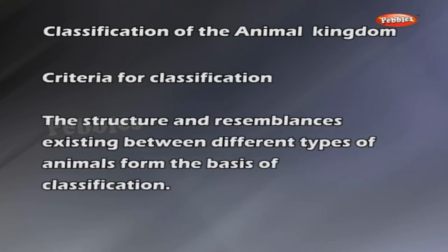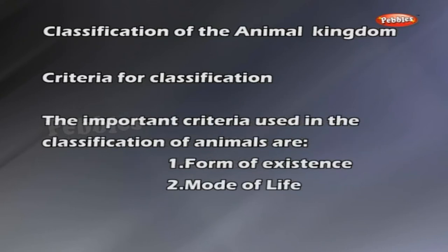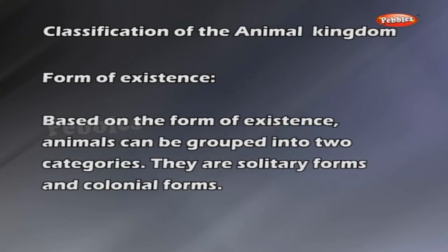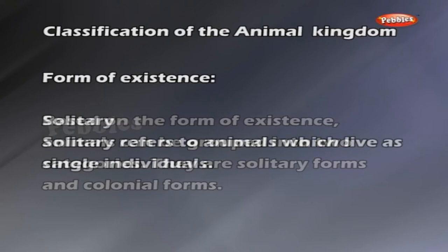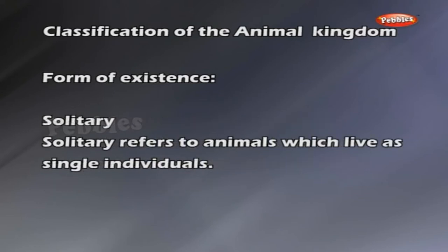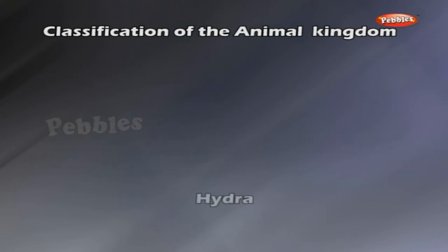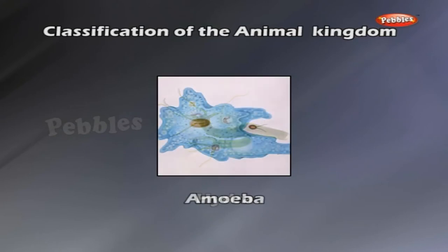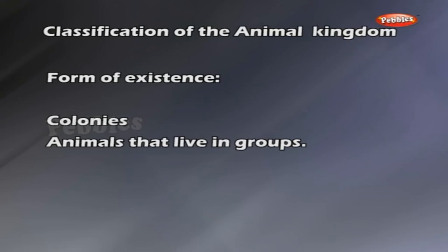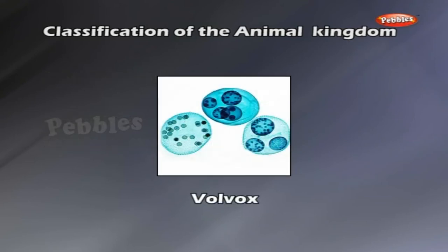Criteria for Classification. The structure and resemblances existing between different types of animals form the basis of classification. The important criteria used in the classification of animals are: 1. Form of existence and 2. Mode of life. Based on the form of existence, animals can be grouped into two categories: solitary forms and colonial forms. Solitary refers to animals which live as single individuals — examples: Hydra, Amoeba. Colonial animals live in groups — example: Volvox, etc.